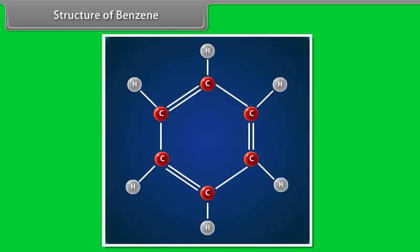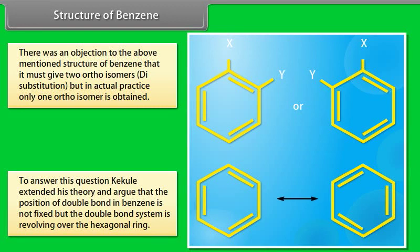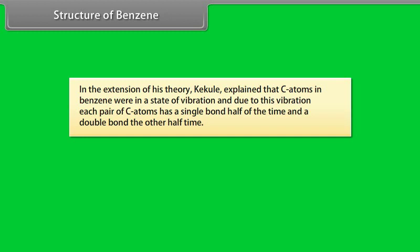There was an objection to the above mentioned structure of benzene that it must give 2 ortho isomers in dye substitution. But in actual practice, only one ortho isomer is obtained. To answer this question, Kekulé extended his theory and argued that the position of double bond in benzene is not fixed, but the double bond system is revolving over the hexagonal ring. He proposed the given structures and said that all C-C positions have a partial double bond character. In the extension of his theory, Kekulé explained that C atoms in benzene were in a state of vibration. And due to this vibration, each pair of C atoms has a single bond half of the time and a double bond the other half of the time.